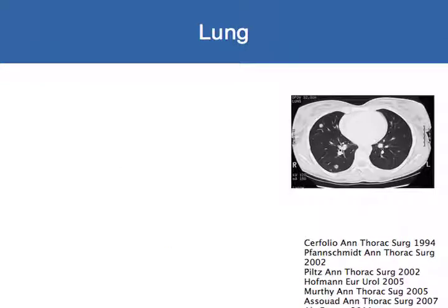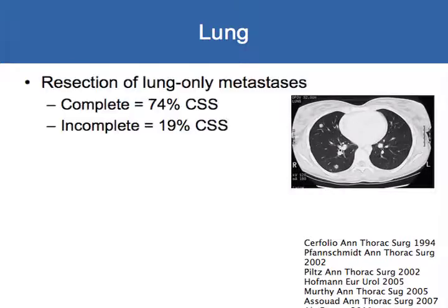Looking at lung — here's an example of lung metastases — many retrospective studies have examined patients who had lung metastases excised. Resection of lung-only metastases, when you can remove all of them, yields 74% cancer-specific survival, meaning they don't die of their disease. Incomplete resection yields only 19% cancer-specific survival, far worse. So if you're going to do it and can remove it all, great — if you can't take it all out, you may want to reconsider.